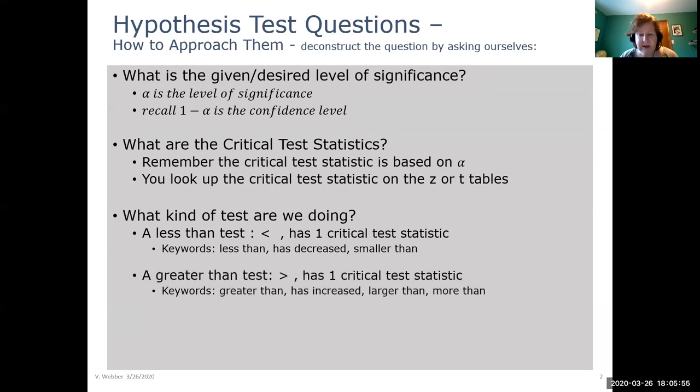We could have a greater than test and again we'd have one critical test statistic where it would be a positive value. And again we'd have different keywords like greater than, has increased, larger than, or more than.